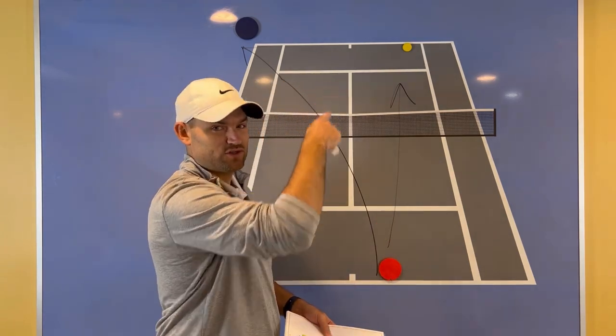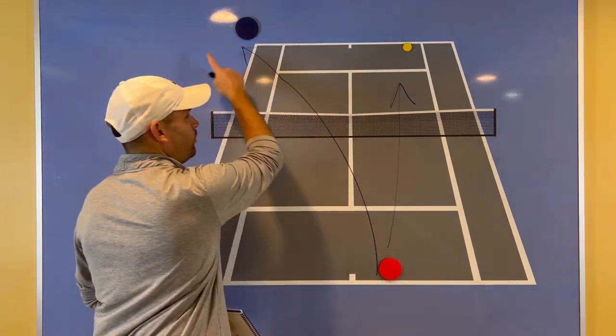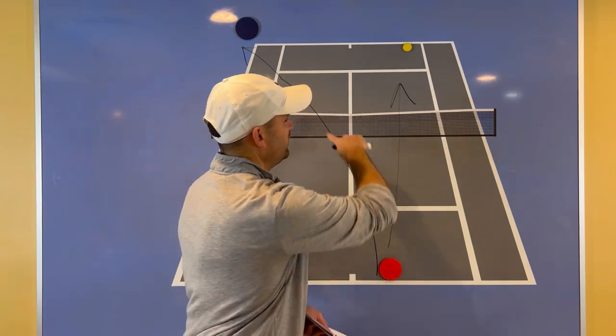So I'm gonna show you right now Carlos Alcaraz versus McKenzie McDonald. Carlos is on the other side of the court and he serves out wide, pulling McKenzie off the court, and he has the open court for the finisher.